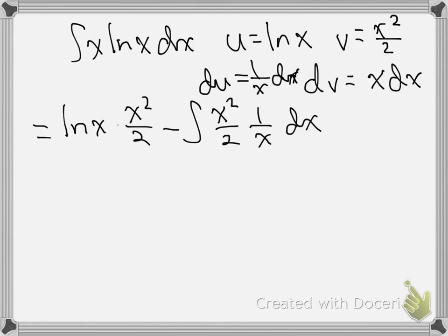If you notice what happens here, we're actually going to get a piece to cancel, because we can cancel out this x with one of the x's here. And that's actually just going to be x over 2.